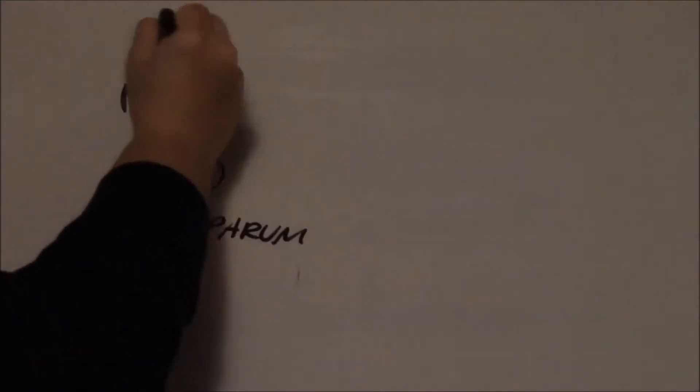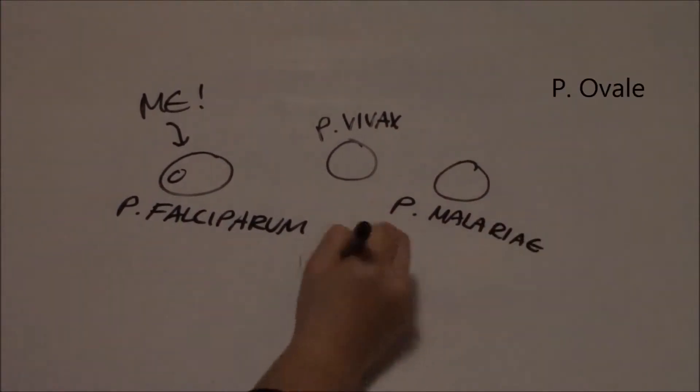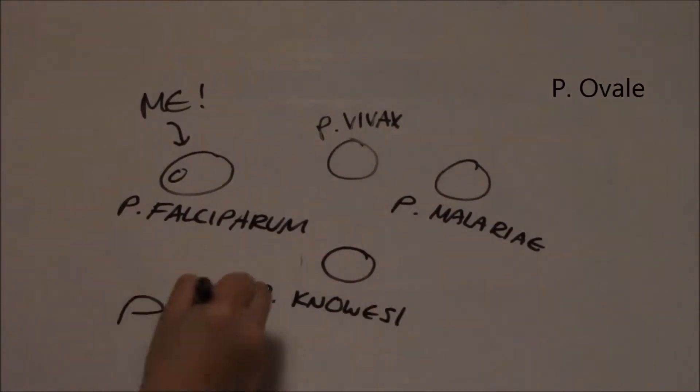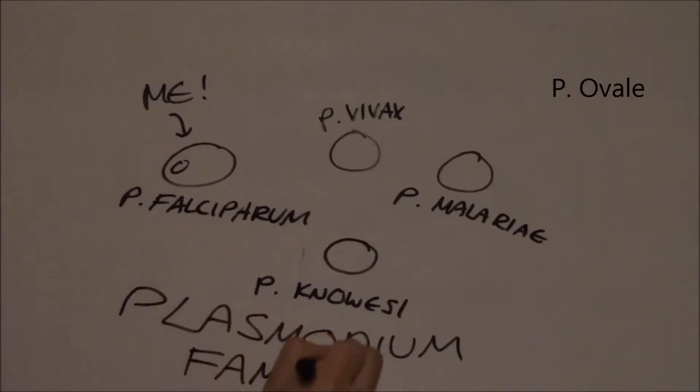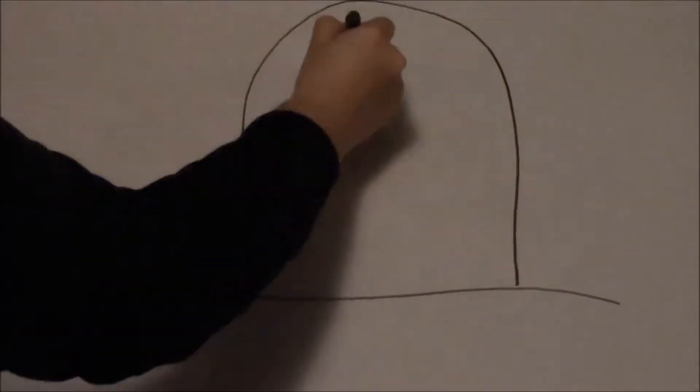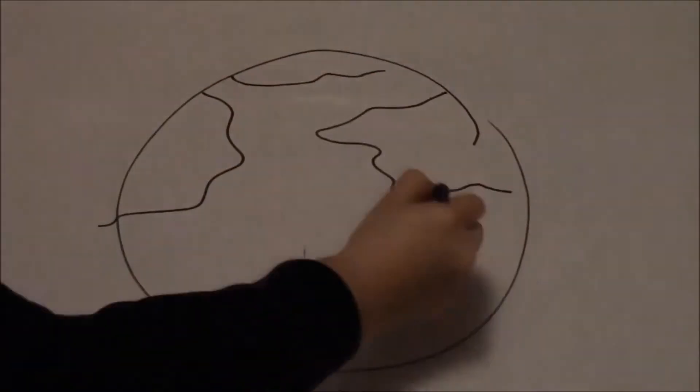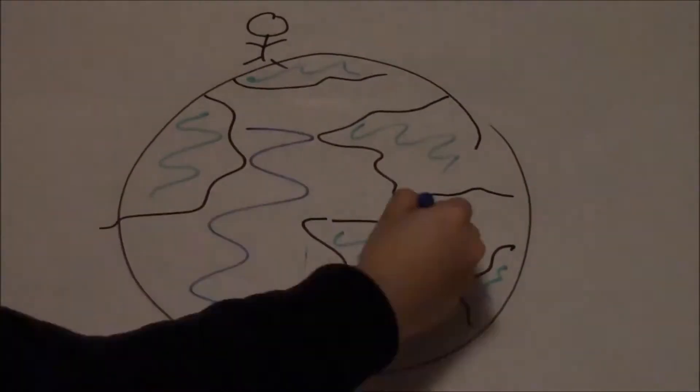Malaria is a serious and fatal disease caused by me and my four siblings: Plasmodium vivax, Plasmodium malariae, Plasmodium ovale, and Plasmodium knowlesi in our big Plasmodium family, spread by the bite of infected mosquitoes. Did you know that I cause 75% of malarial deaths worldwide? Still don't know who I am? I'm that disease that kills approximately 2 million people globally each year.